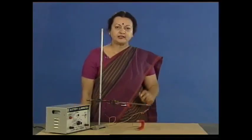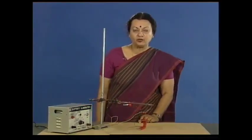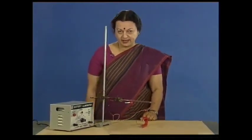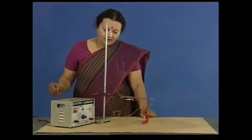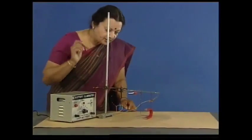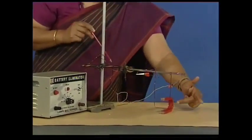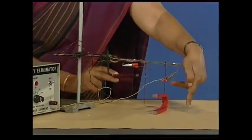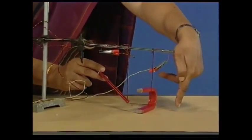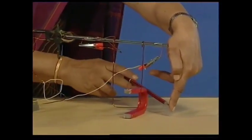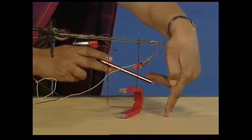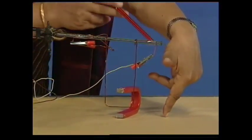Let us apply this Fleming's left hand rule to our experimental setup. From the battery eliminator, we have the current in this direction. The magnetic field, like this. So the direction of force will be along the thumb.